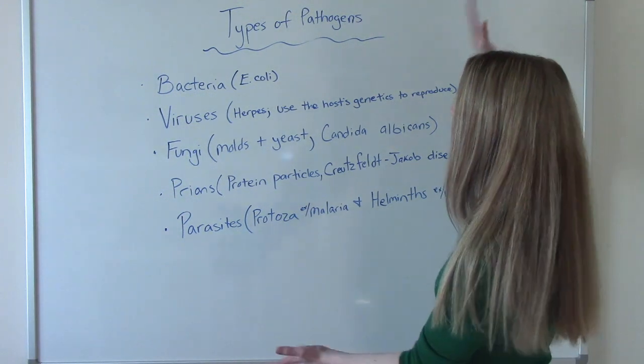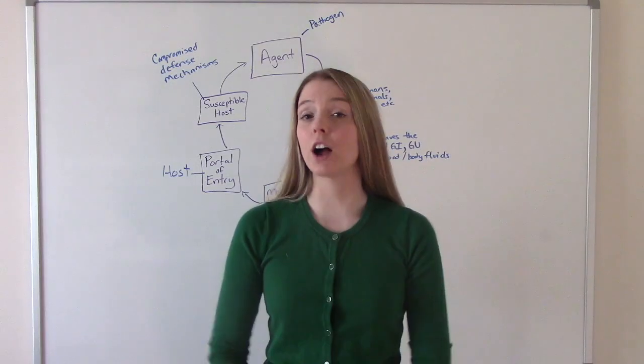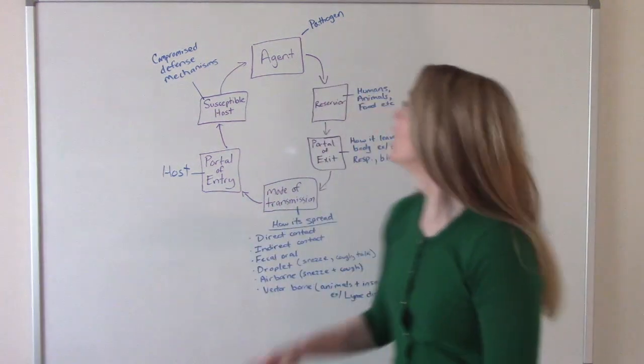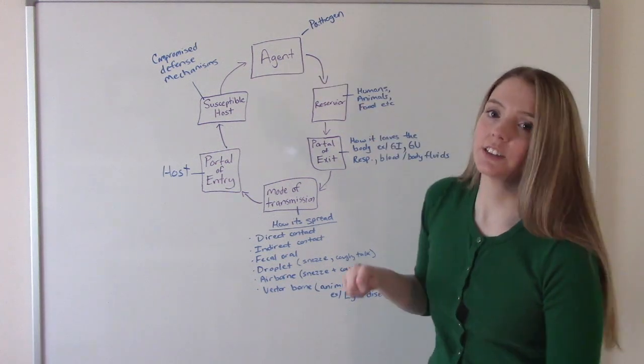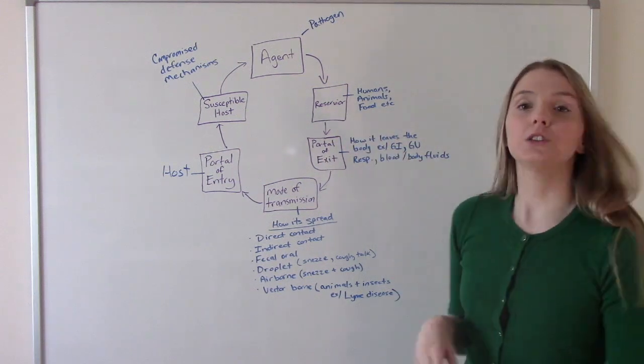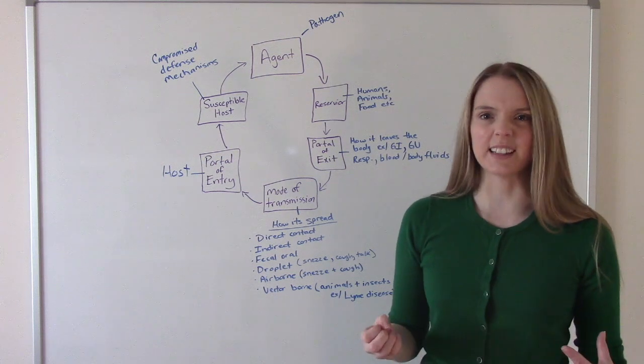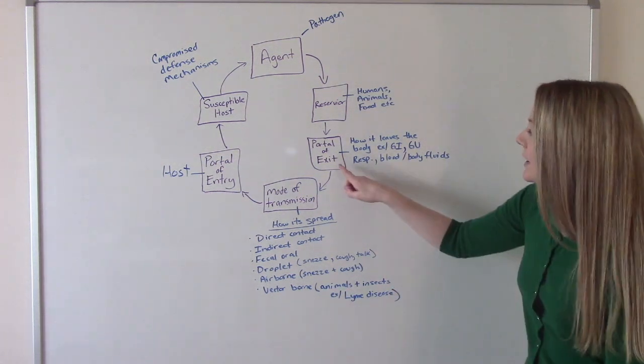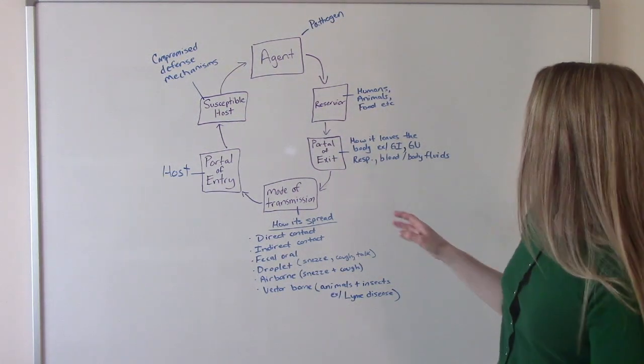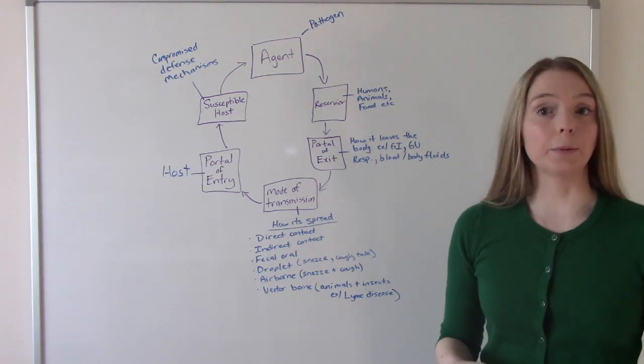Now that we know the different types of pathogens, let's talk about the infection chain. The first thing is our pathogen, which is the agent causing us to get sick. We need a reservoir, usually this is humans or people, but it can be food or soil. It needs a portal of exit - how is it going to leave your body? For some examples, it could leave through the GI, the GU, the respiratory tracts, or blood or body fluids.